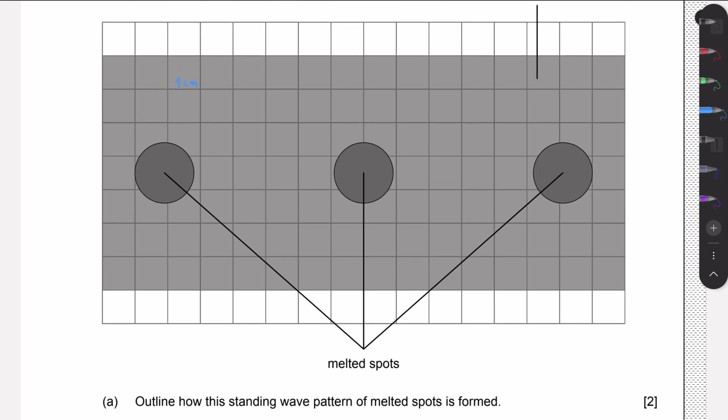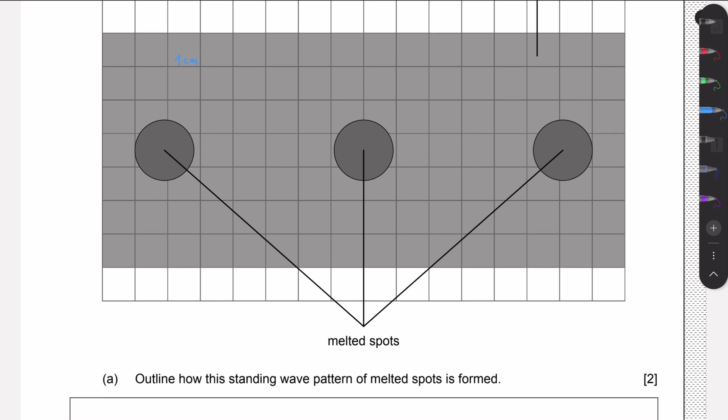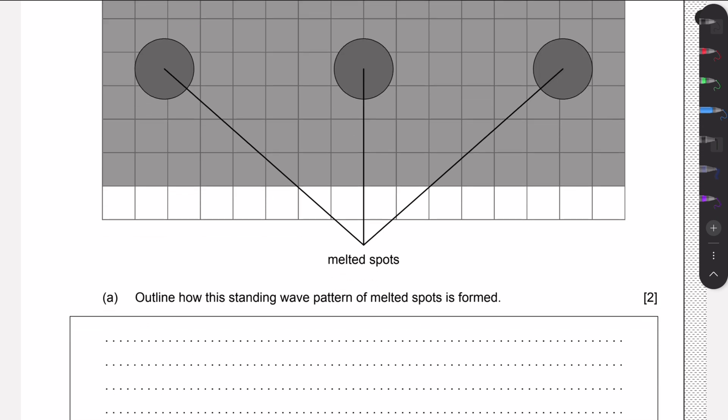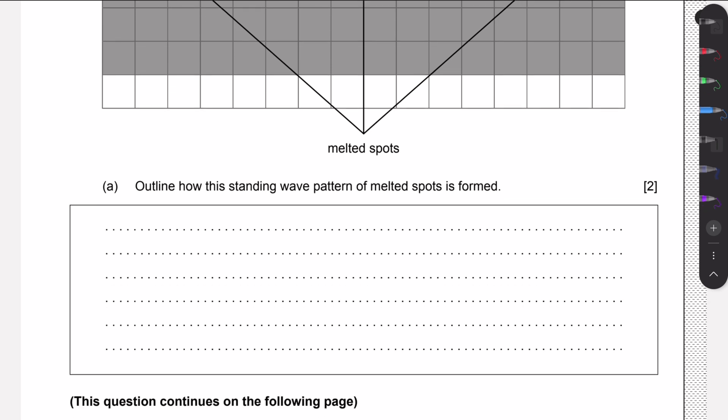Each square is one centimeter wide. Firstly, we need to outline how a standing wave pattern of melted spots is formed. This is a typical waves question. The way a standing wave is formed is through superposition of waves or through the constructive interference of two waves traveling in opposite directions.